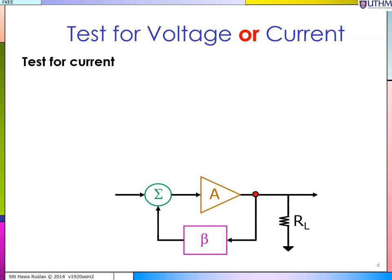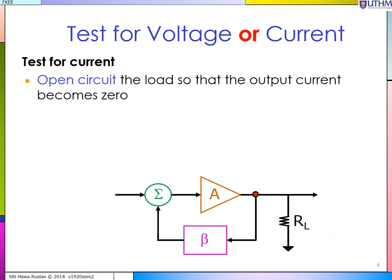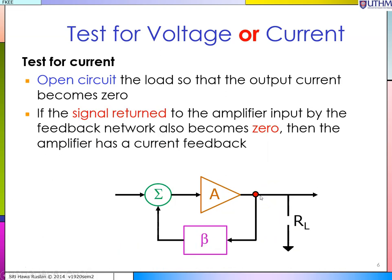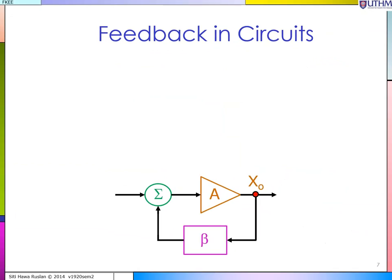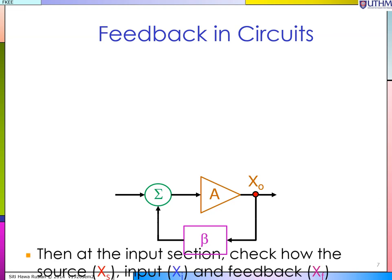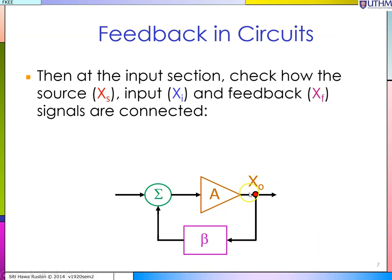The other test is the test for current. You don't have to do both — the result will be the same. For the test for current, you open the load. When the load is open, Vout is not zero, meaning there is a current flowing from the output node to the feedback network. So it is a current feedback.